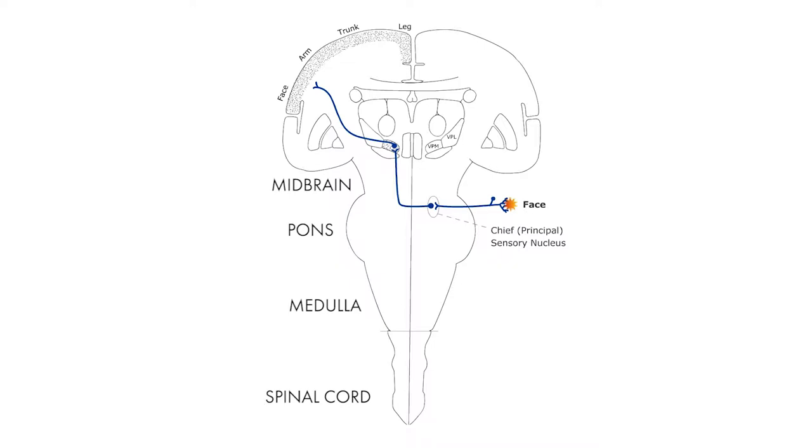Let's animate that. Information comes in, synapses, crosses, goes to the thalamus through the internal capsule to the face region of the cortex. Recall, this is only information from the face, and it's out on the lateral cortex, the lateral postcentral gyrus.